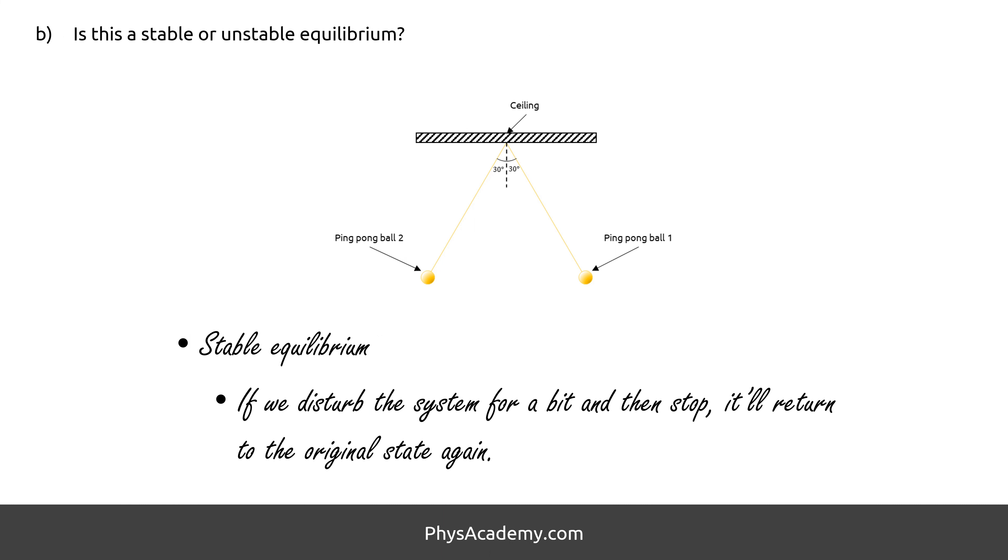To check what type of equilibrium we have, try to push the object and see what happens to them. If they return to where they already were, it means they prefer the original state, which is a stable equilibrium.